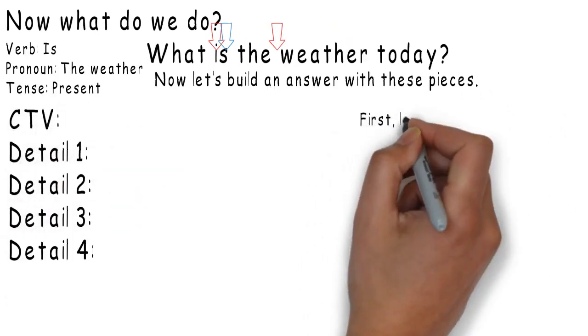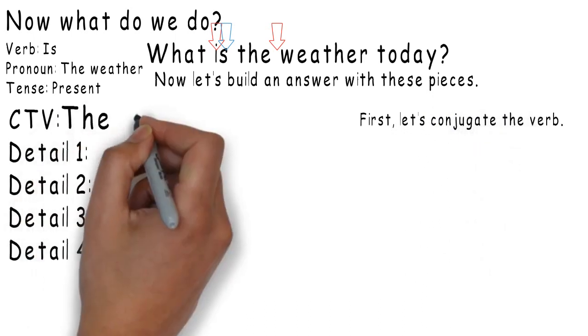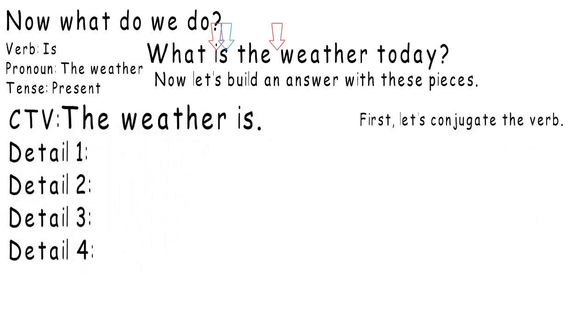Conjugate the verb. First, we should conjugate the verb. The weather is. Okay.